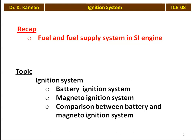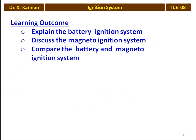We are going to discuss the ignition system — the two types: battery ignition system and magneto ignition system — and compare them in the following slides. The learning outcomes for the student: at the end of the lecture, the student will be able to explain the battery ignition system, discuss the construction and working of the magneto ignition system, and compare battery and magneto ignition systems with respect to their relative advantages and disadvantages.